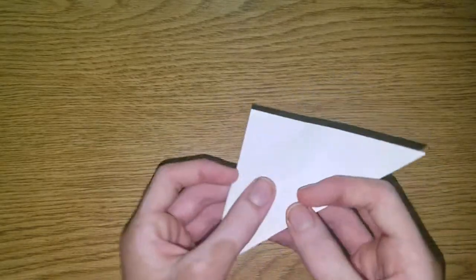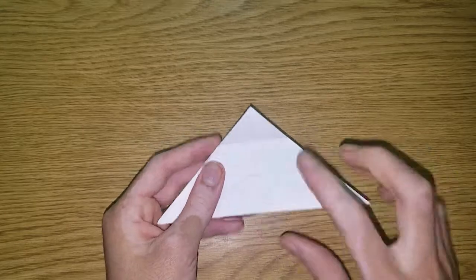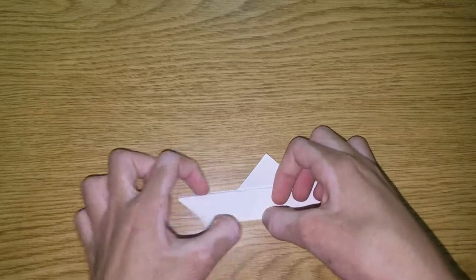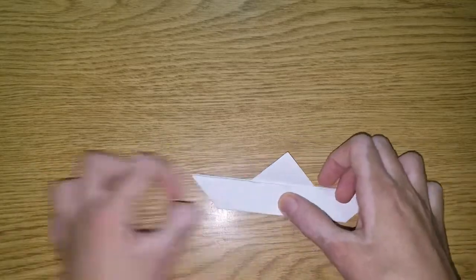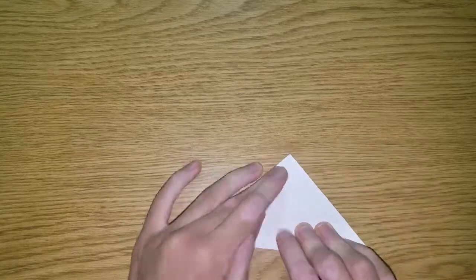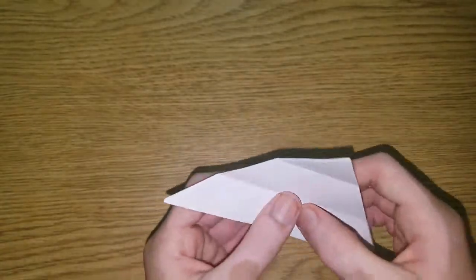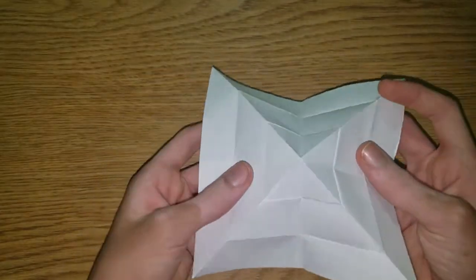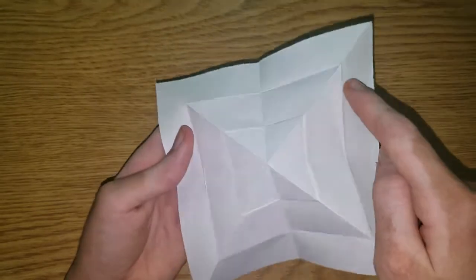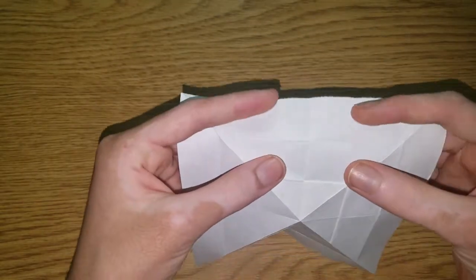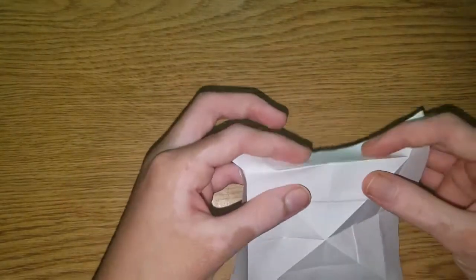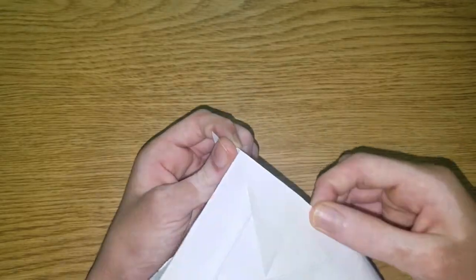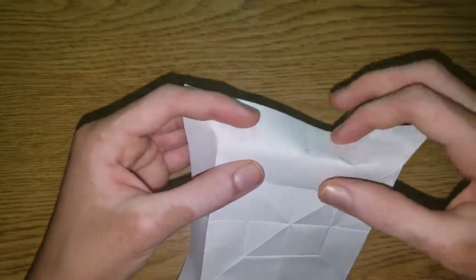Now you can unfold, and fold this edge to that crease you just made. And crease this sharply. And now we're going to sink it. So you're going to open it up a little bit, and make these creases mountain folds. This one's already mountain folds.